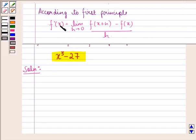Now we have to find f dash x. So let us see what is f x. f x is the given function, that is x cube minus 27. So function at x plus h will be, we simply replace x by x plus h. So we will have x plus h the whole cube minus 27.